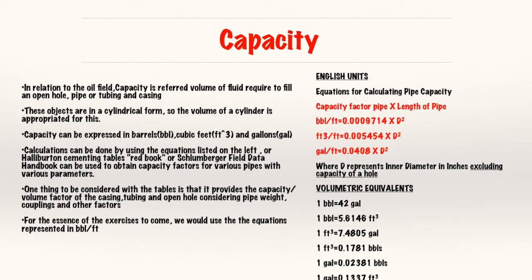So let's start with your capacity. In oil field terms, capacity is just defined as the volume of fluid required to fill an open hole, a pipe, a tubing, or a casing. So these objects are usually in a cylindrical form. And the volume of a cylinder is what is derived. These formulas are derived from the volume of a cylinder. So it can usually be expressed in barrels, cubic feet, and gallons.